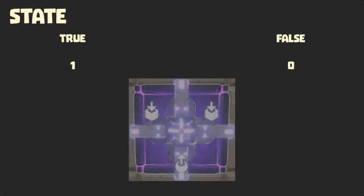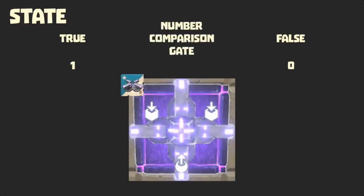Understanding true as 1 and false as 0 will help us better understand the number comparison gate, which I will from here on call simply the comparator.